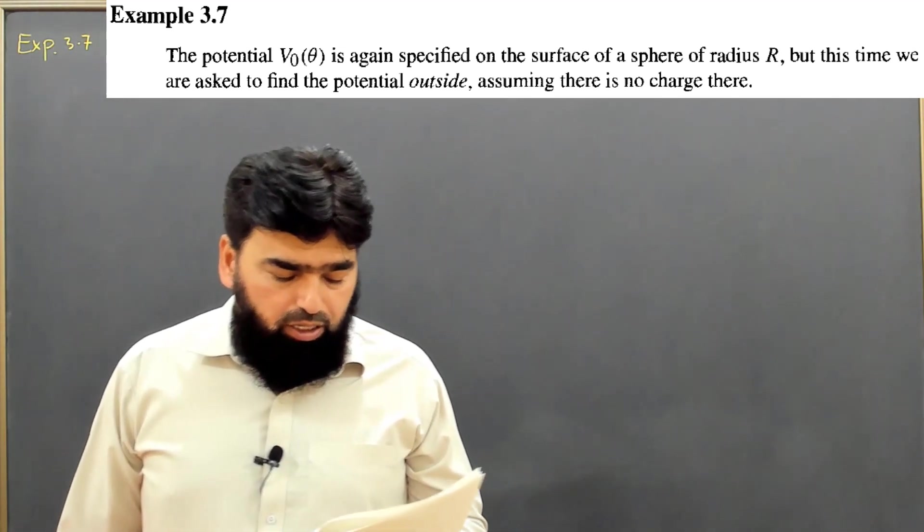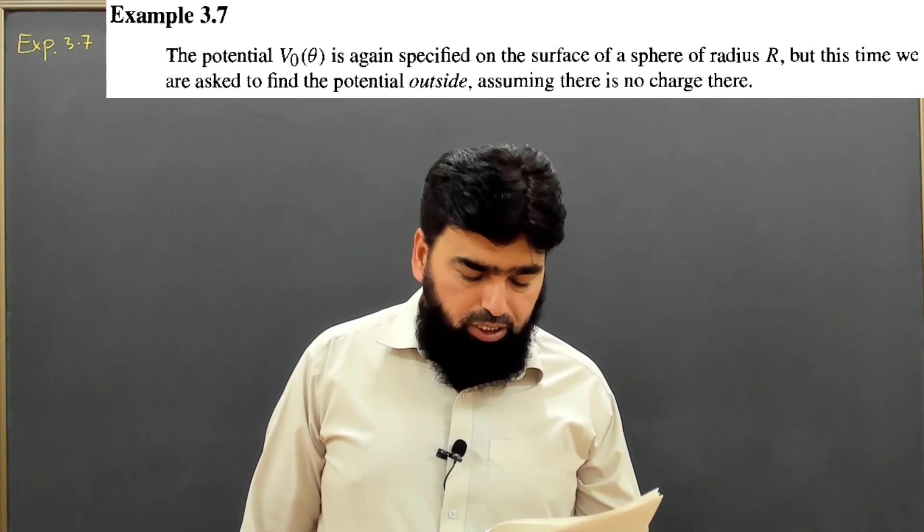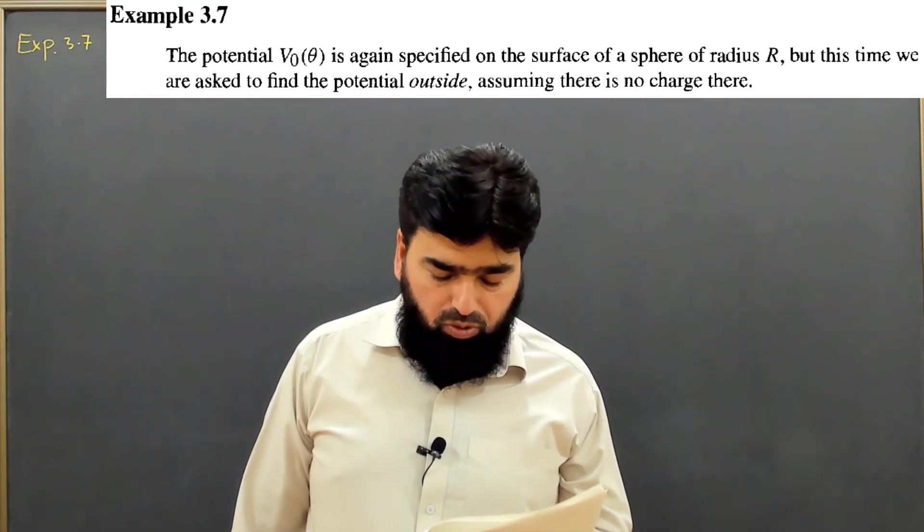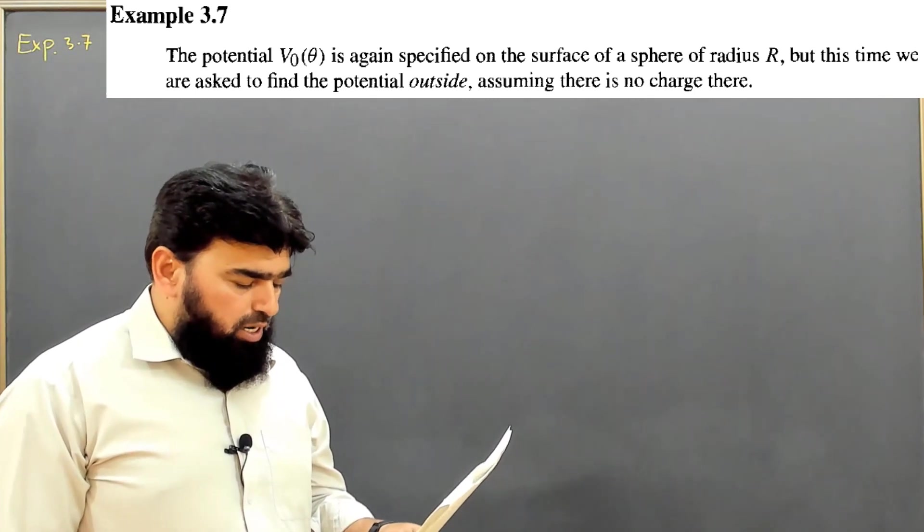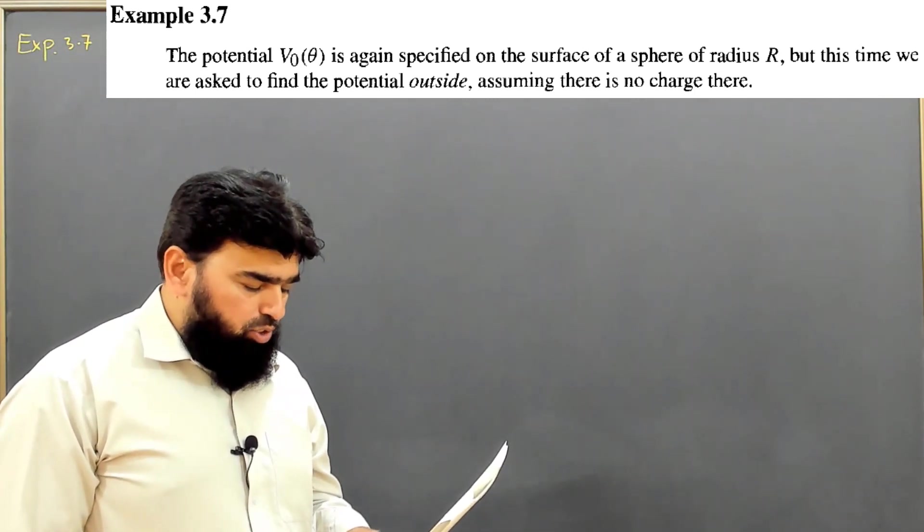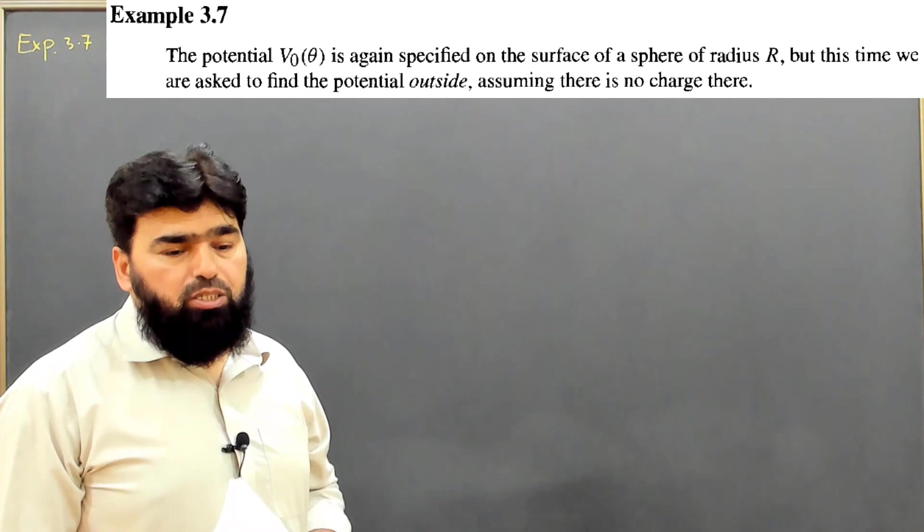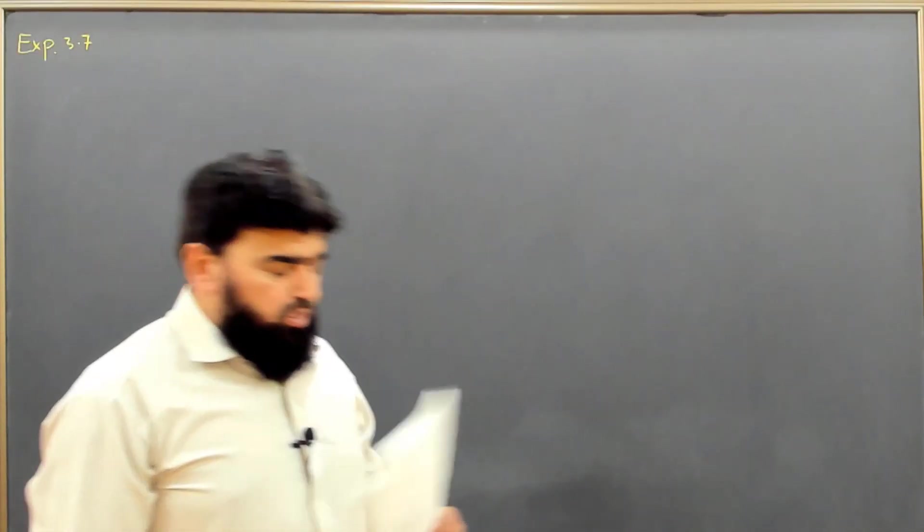Let me read this statement. The potential V₀ of theta is again specified on the surface of a sphere of radius R, but this time we are asked to find the potential outside, assuming there is no charge outside.